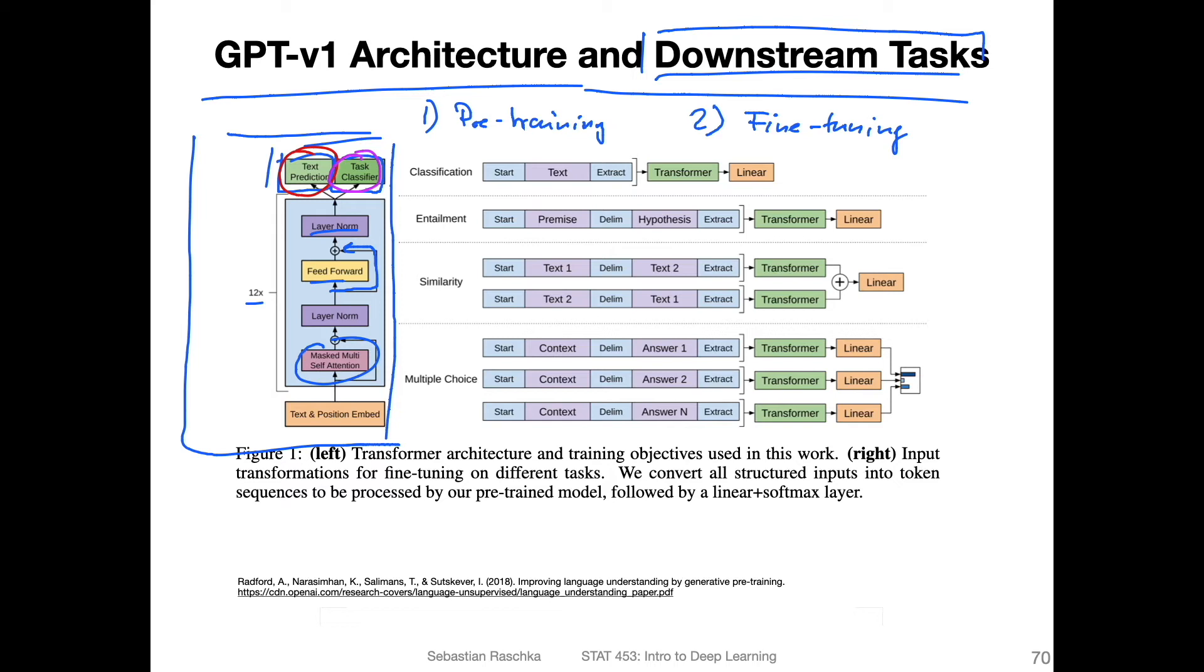On the right-hand side, these are visualizations for the different tasks they looked at and how the input has to be formatted. For instance, for classification, they provide a start token, the main text, and an extraction token, like an end-of-sequence token essentially. Then they put this through the transformer and have an additional linear layer, an output layer. It would be a fully connected layer for classification. You could then use softmax activation as the last activation and then use a cross-entropy loss for training. It's just like a classifier essentially.